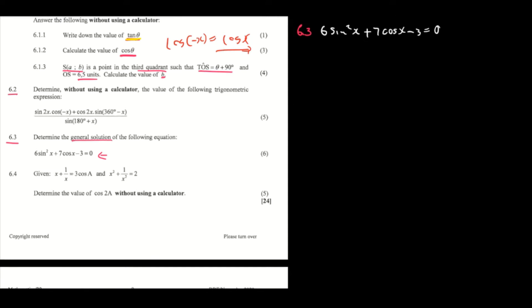Here you are having different trig ratios, so you need to change one trig ratio so that you can have common trig ratios. This is the same as having 6y² + 7x − 3. We need to change this variable to be the same as this variable here.